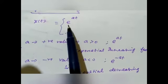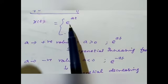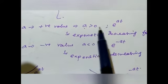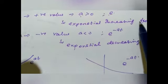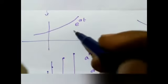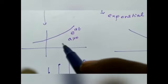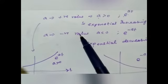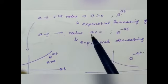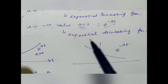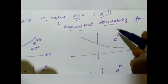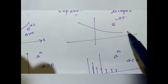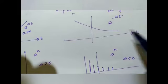The next function is the exponential function, denoted by e^(at). When a is greater than zero, e^(at) is called an exponential increasing function. When a is negative, that is a less than zero, e^(−at) is called an exponential decreasing or exponential decaying function. This is valid for continuous time signal.